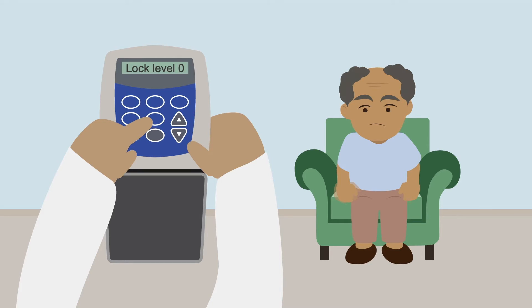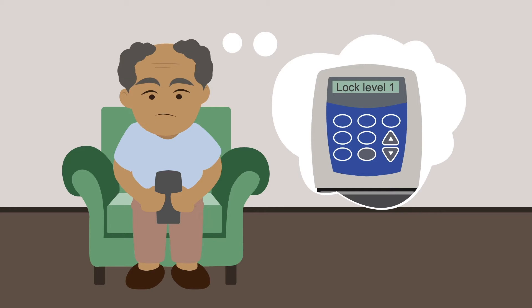Lock level 0 allows full access to all programming and is the setting that you'll use to program the pump. Lock level 1 allows the patient to be able to increase or decrease the continuous infusion during the day based on their symptoms.